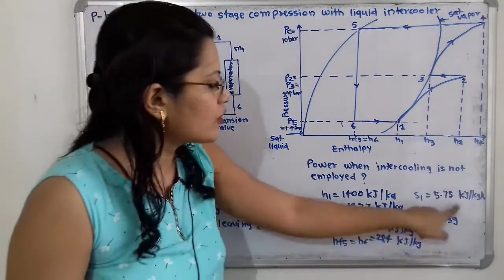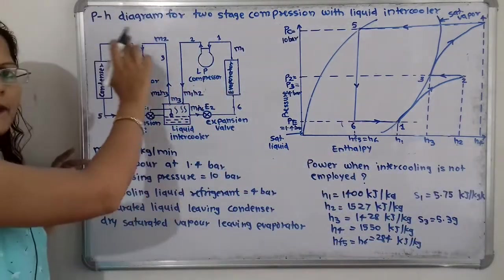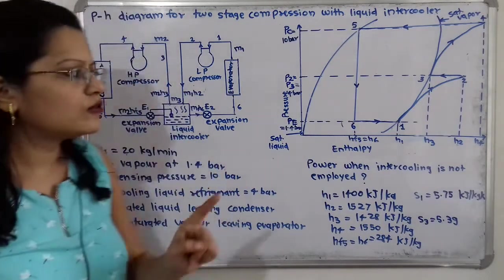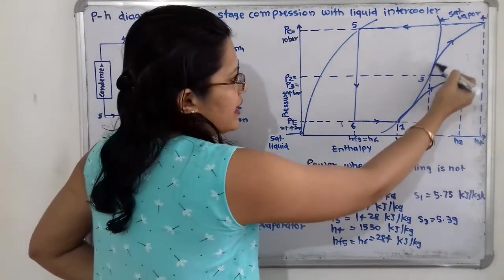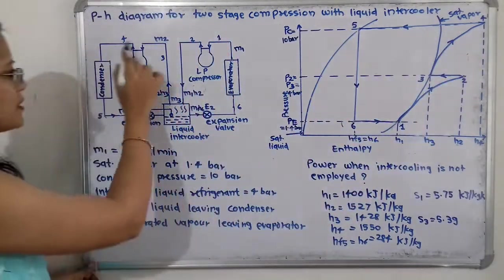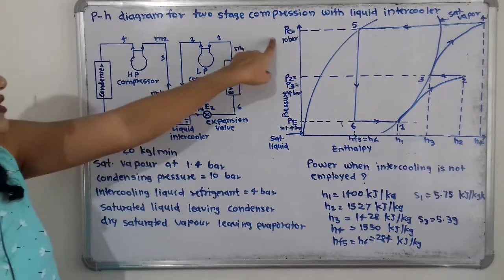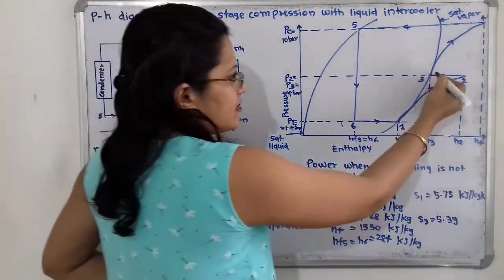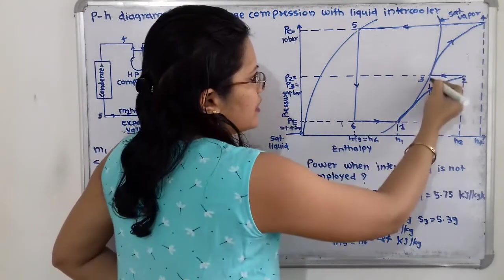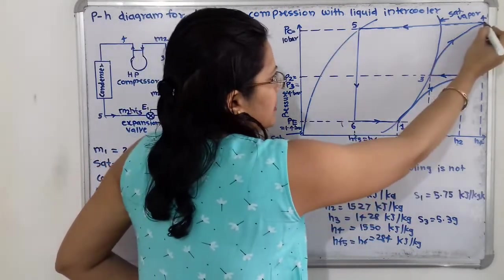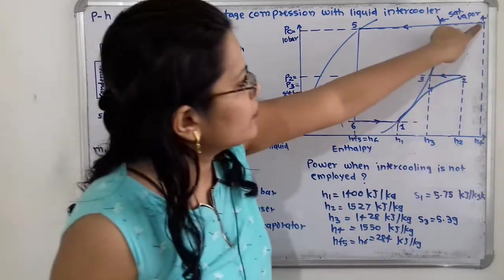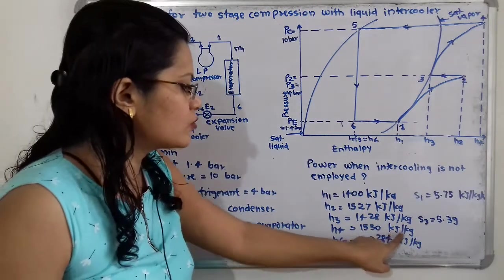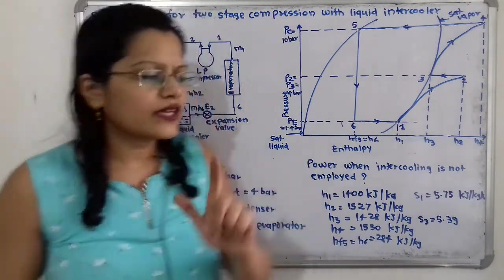At point 3, the entropy s3 = 5.39 kJ/kg·K. The high pressure compression then takes place at this constant entropy. We select this entropy line and extend it to the 10 bar pressure line. The intersection gives point 4, and extending to the enthalpy axis gives h4 = 1550 kJ/kg.